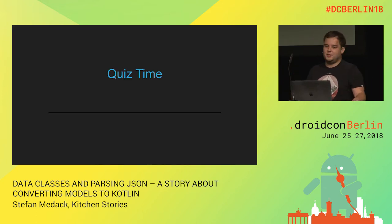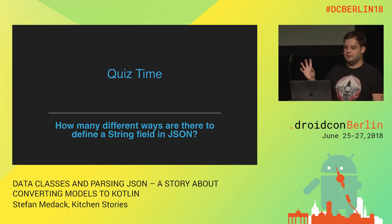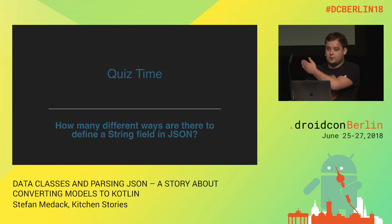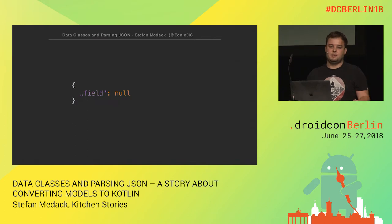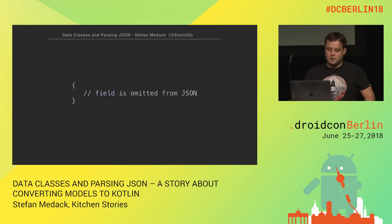Just to wake you all up a little, it's quiz time. How many different ways do you think there are to define a string in a JSON? Of course you can have a field with some text — that's the first option. The second option is that the field is just null. But there's also a third option that people tend to forget: the field is just not sent. Keep that in mind, because it's going to be important for the rest of the talk.